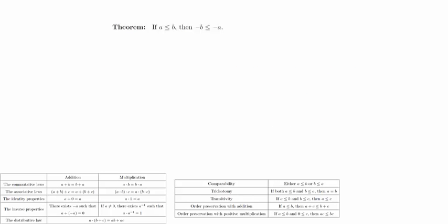Theorem. If a is less than or equal to b, then negative b is less than or equal to negative a. Suppose a is less than or equal to b. Since order is preserved under addition, we could add c to both sides of the equation, where c is negative a plus negative b, and negative a and negative b are the additive inverses of a and b respectively.